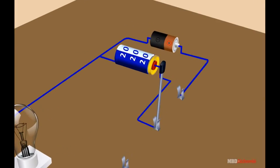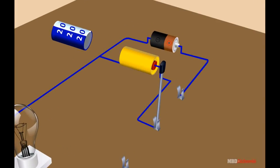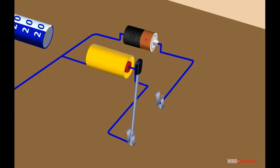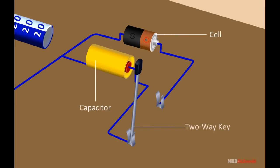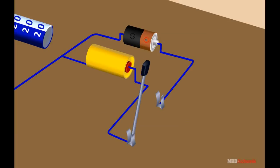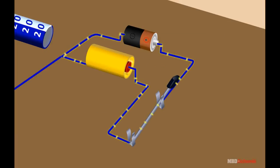The charging of a capacitor is a process which is equivalent to transferring charge from one conductor to the other. Here, a capacitor is connected to a cell, and when the two-way key is closed, the capacitor starts charging.